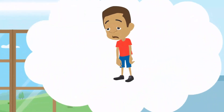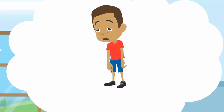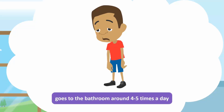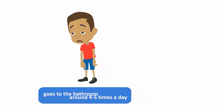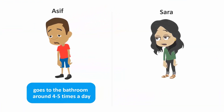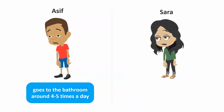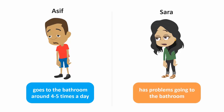What happened to him? He was saying that something is wrong with his digestive system and that he needs to go to the bathroom around four to five times a day. Sara is sick too, but she is facing the opposite problem. She is having problems going to the bathroom and feels like there is a blockage in her digestive system.